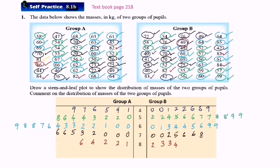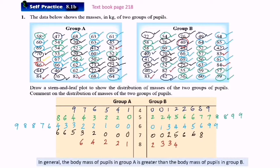Now we comment on the distribution of masses of the two groups of pupils. In general, the body mass of pupils in group A is greater than the body mass of pupils in group B. So if you look at the number 80 something, group A is more than group B.